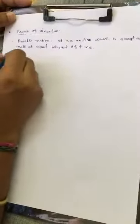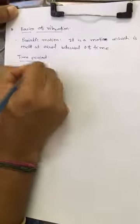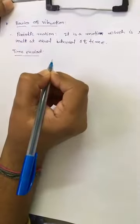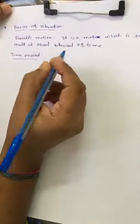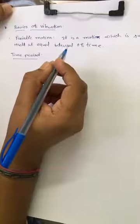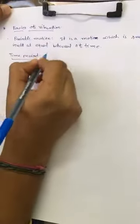We will also discuss about the time period. These are the basic terms which you have to study while you are going to analyze any vibratory body. Time period is the time taken to complete one cycle.